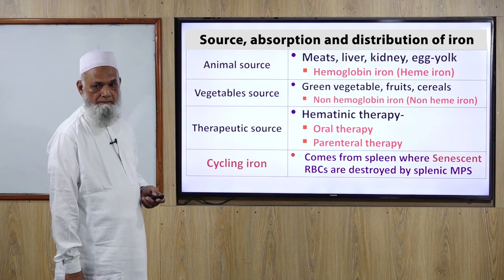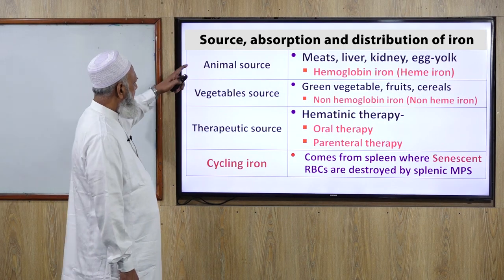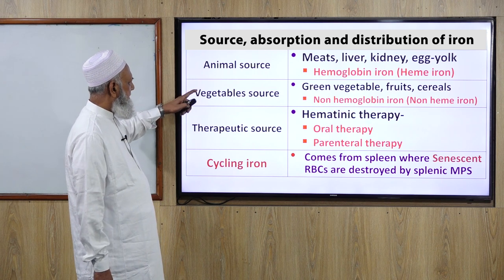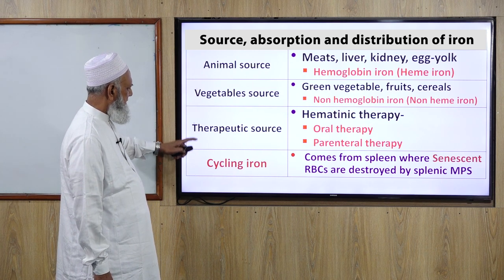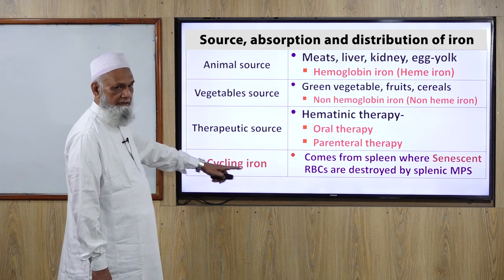Sources of iron: animal source, vegetable source, therapeutic source, and cycling iron.